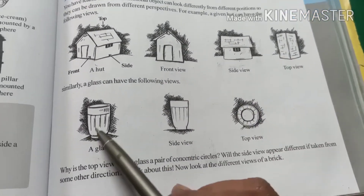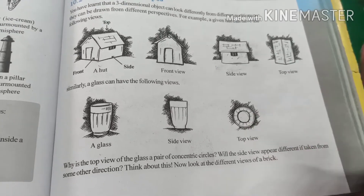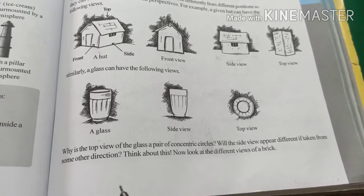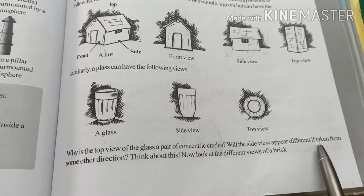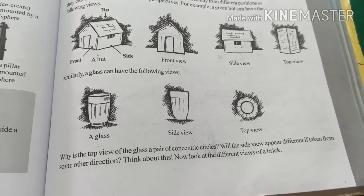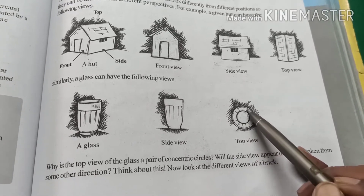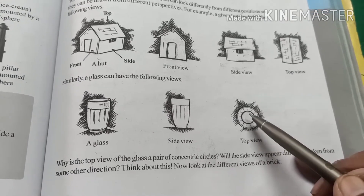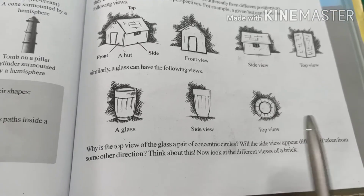For a glass, the side view shows a trapezoid shape. If you view it from the top it is a circular path, and from the bottom it is also circular, but the top circle is bigger than the bottom circle. That is why the top view of the glass shows a pair of concentric circles — the smaller inner circle represents the bottom and the larger outer circle represents the top. The side view appears the same from any direction since the shape does not change.